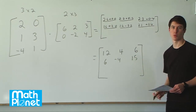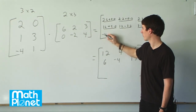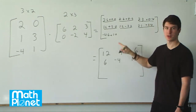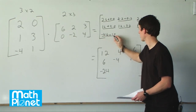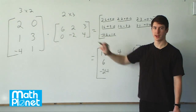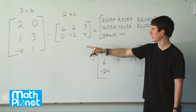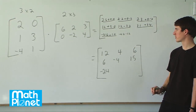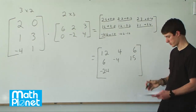Two rows down, one more to go. Third row, first column: negative 4 times 6 plus 1 times 0. That's just 0, and negative 4 times 6 is negative 24. Then third row, second column: negative 4 times 2 plus 1 times negative 2. We have two negative numbers: negative 8 minus 2 gives us negative 10.